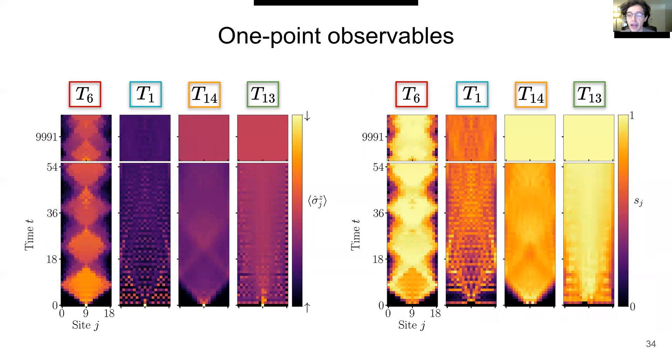Let's look at outcomes of simple one-point observables. On the right, I show the local von Neumann entropy, and on the left, the local magnetization, which is the analog of zero or one from the classical ECA case. The far-from-Goldilocks rule T13 quickly equilibrates and remains equilibrated at late times. The near-Goldilocks rules T1 and T14 remain somewhat dynamic at later times, but it's the Goldilocks rule T6 which remains very dynamic through all the times we simulated.